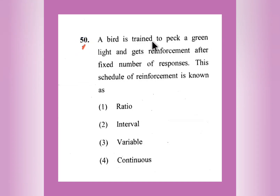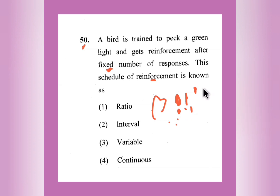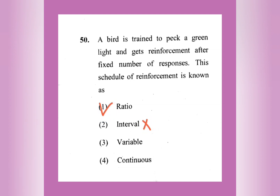Question number 50: A bird is trained to peck a green light and gets reinforcement after a fixed number of responses. The schedule of reinforcement is — fixed ratio, fixed interval, variable ratio, or continuous? Each time the bird pecks, it gets food after a fixed number of responses. It is not interval-based, not variable, and not continuous. The right answer is fixed ratio. With this we have completed 25 questions from the psychology part, making a total of 50 questions in this question paper.